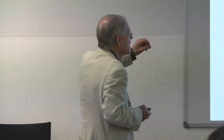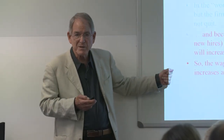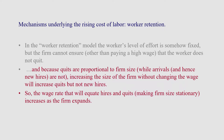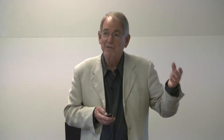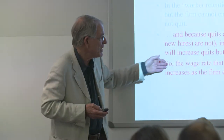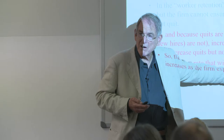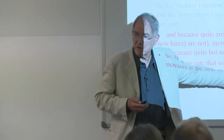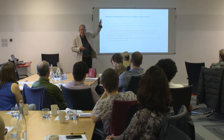Let's look at the mechanisms underlying why these things give rise to a rising cost of labor. When we have the problem of worker retention, one way to generate a rising average cost of labor function is simple: suppose quits are proportional to firm size and arrivals are not. Then in order to render some level of high employment stationary, you have to pay higher wages for a larger level of employment. As you get bigger, you have more quits but not more arrivals, so as you get bigger you have to pay higher wages to either get more arrivals or to deter quits. The wage rate that equates hires to quits rises the larger the firm.